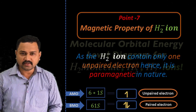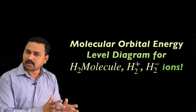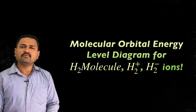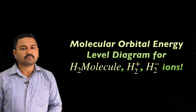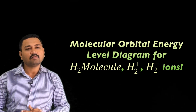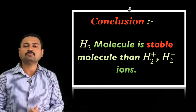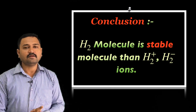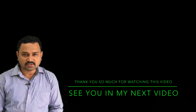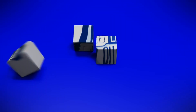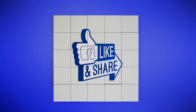In this video, we have explained the formation of H2 molecule, H2 plus ion, and H2 minus ion using molecular orbital energy level concept, with 7 to 8 simple key points. The hydrogen molecule is the most stable among the three, compared to H2 plus ion and H2 minus ion. Thank you so much for watching this video. See you in the next video.